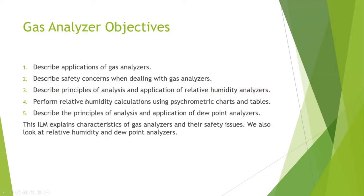The objectives include: applications of gas analyzers, safety concerns for gas analyzers, principles of analysis for relative humidity, calculations for relative humidity using a psychrometric chart — which can be confusing but we'll make it straightforward today — and lastly, principles of analysis and application of dew point analyzers. So the characteristics covered are gas analyzers, safety issues, relative humidity, and dew point.